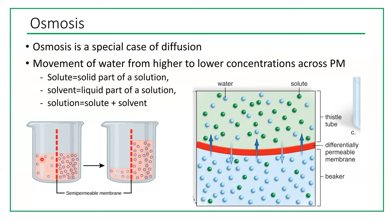Here we have two beakers with a right part and a left part, separated by a semipermeable membrane that allows only water to move through — solute particles cannot move through. The blue represents water and the green represents solute. We have higher solute concentration on one side and lower on the other. The solute has a tendency to move down its gradient but cannot because of the membrane. So water will move from high concentration of water to low concentration of water — equivalently, from low concentration of solute to high concentration of solute. Water always moves toward where the solute is.